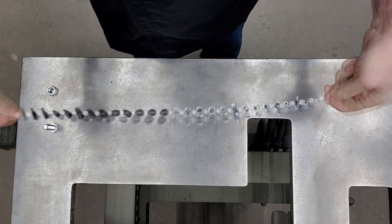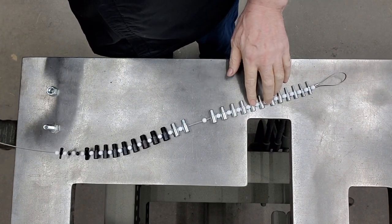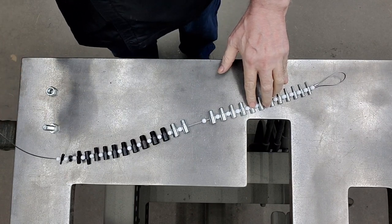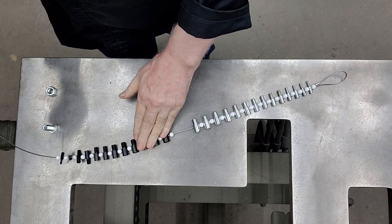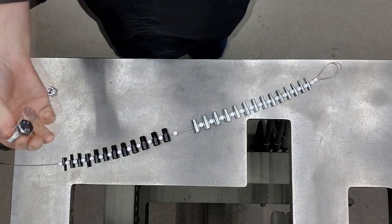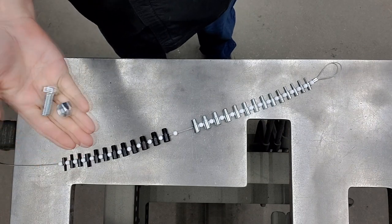The silver are the Imperial, otherwise known as SAE or inch, then you have the metric, which are the black oxide. If you've got a nut and bolt and you want to identify it...